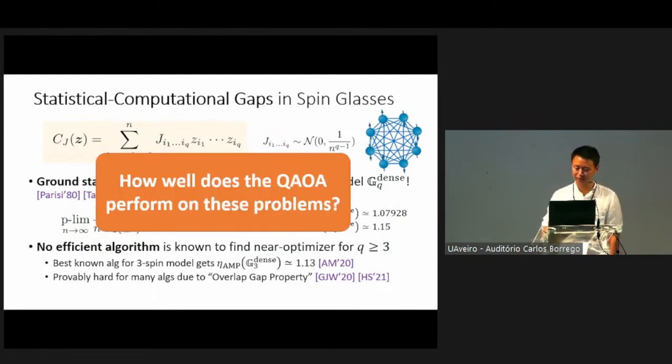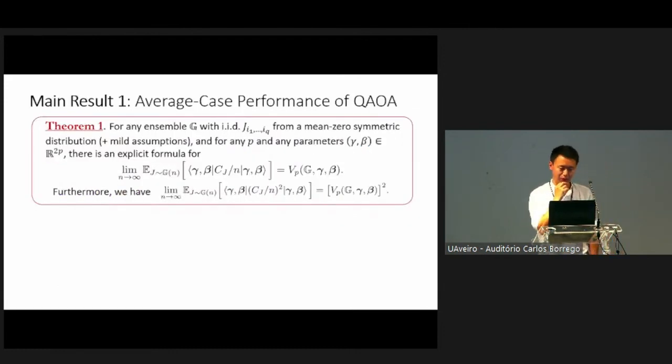There's also known hardness result for classical algorithms. These problems are also not NP-hard. So maybe, if you don't believe that quantum computers can solve NP-hard problems, maybe this is an intermediate hardness problem that's worth tackling. So the question we want to address in this work is how well does the QAOA perform on this problem?